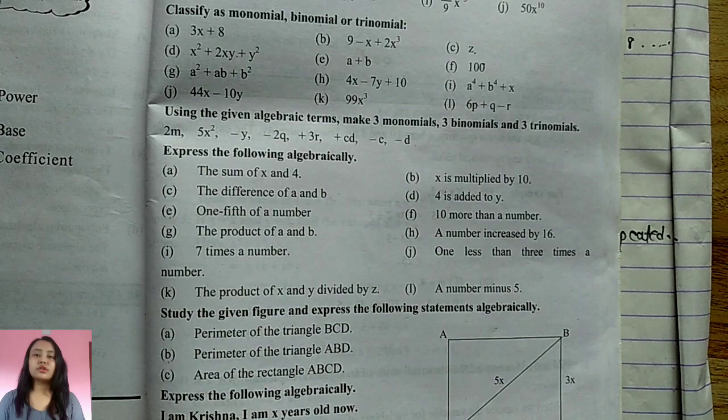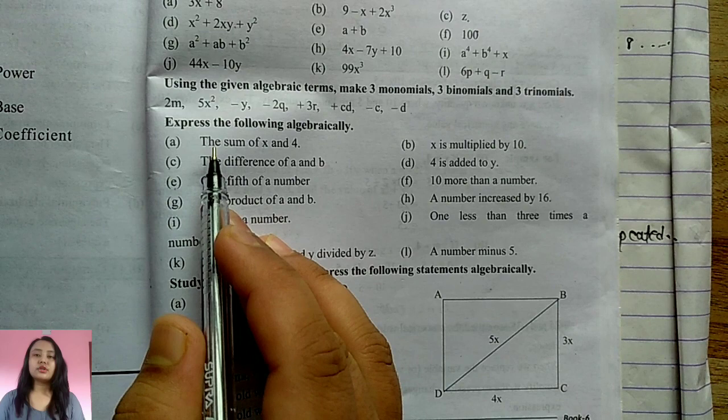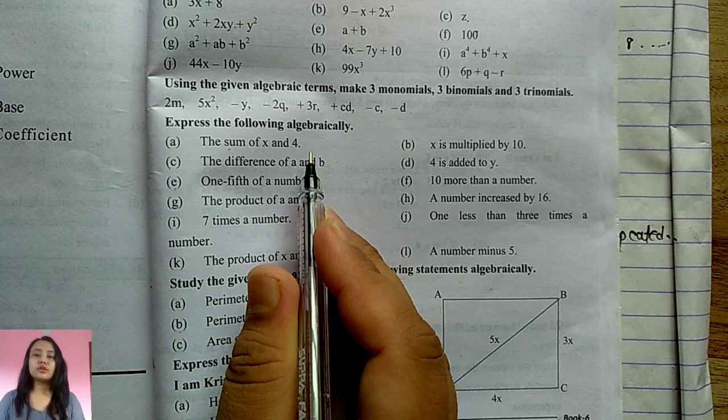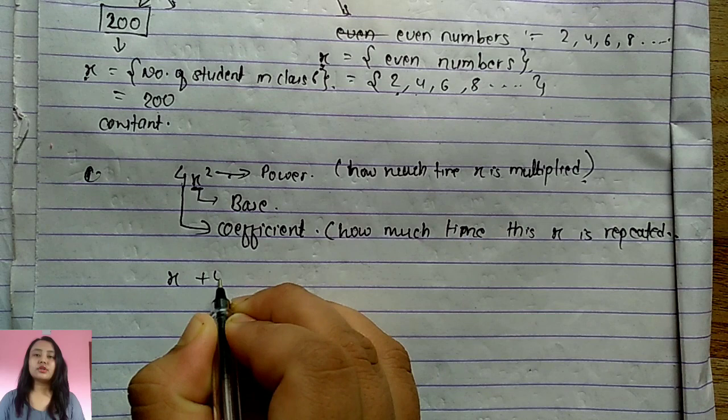Next, we'll express statements algebraically. For example, 'the sum of x and 4' — since sum means addition, the algebraic expression is x + 4.